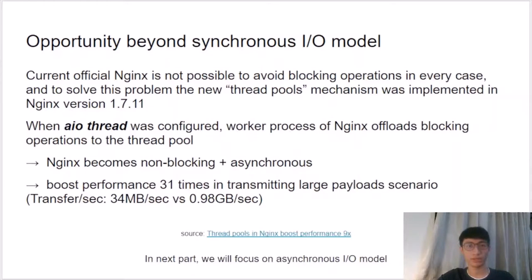We then explore the opportunity to adapt another method. Current official Nginx cannot avoid blocking operations in every case. To solve this, a new ThreadPool mechanism was implemented in Nginx version 1.7.11. When aio threads is configured, blocking operations are offloaded to the thread pool, converting the I/O model into an asynchronous manner. Nginx becomes non-blocking and asynchronous. Nginx claims that aio threads boosts performance 31 times in large payload scenarios.